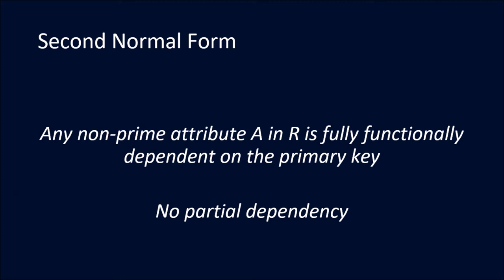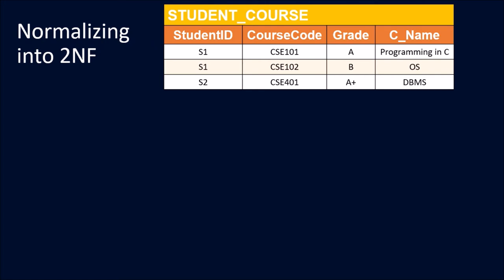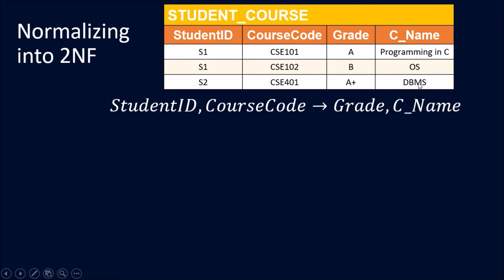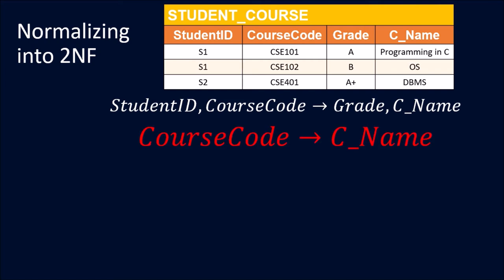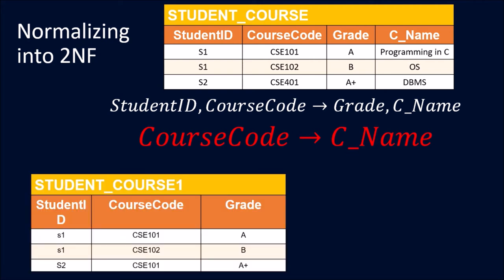Second Normal Form requires that any non-prime attribute in R is fully functionally dependent on the primary key, and it does not allow any partial dependency. In this example, the table has student ID, course code, grade, and course name. The functional dependency is: student ID and course code together identify grade and course name, but course code alone can identify course name — this is a partial functional dependency.